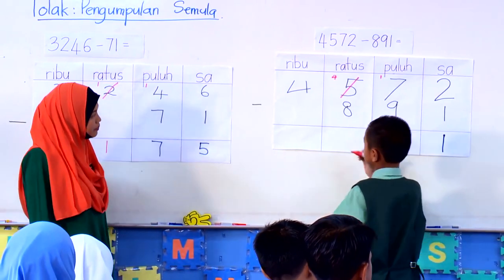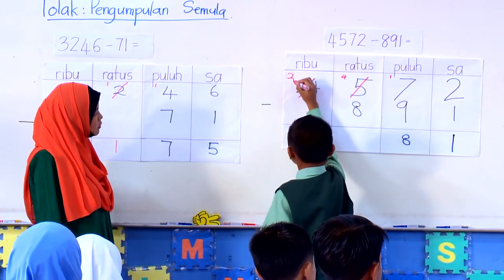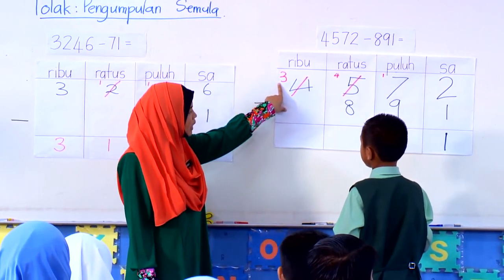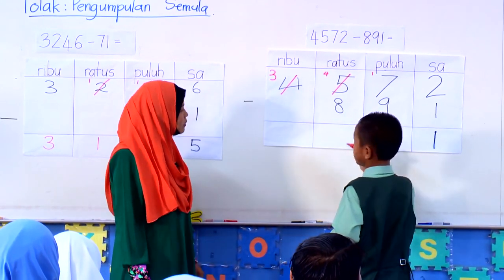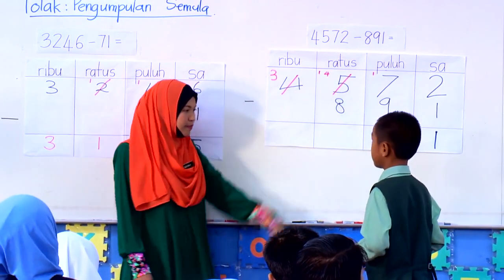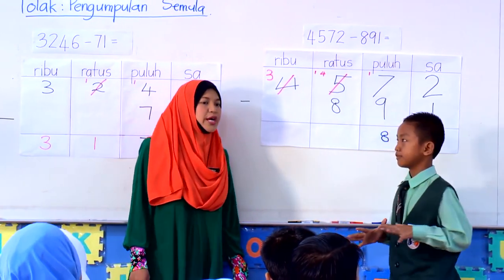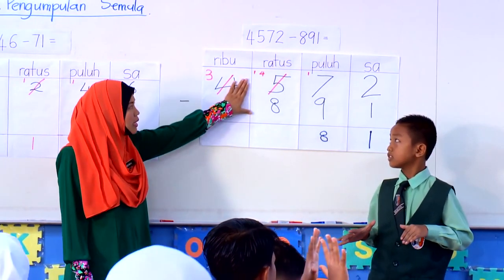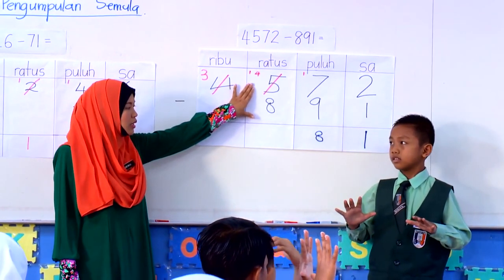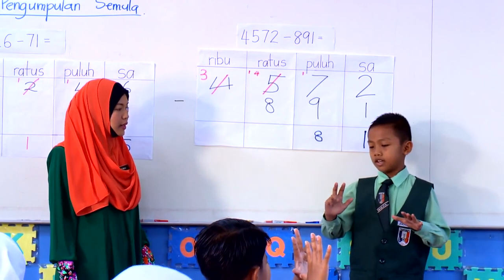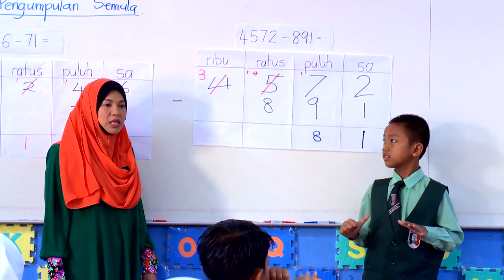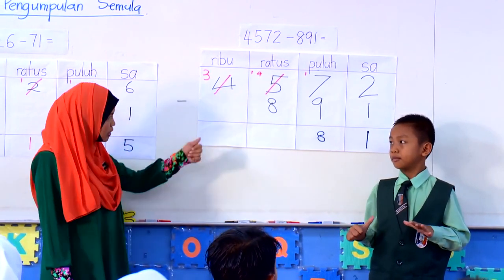Pinjam. Pinjam 3 — lepas tu nak buat apa? Nak bagi berapa? Keluar 10 jari lagi. Kemudian kirakan dari mana? 4 ke atas. Nombor berapa nak mula? 5, 6, 7, 8. Sekarang berapa jari yang masih terbuka? 6. Tuliskan jawapan kamu.